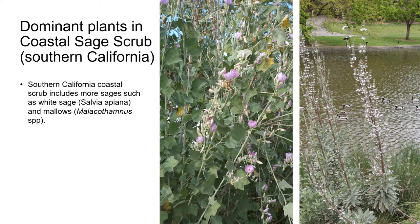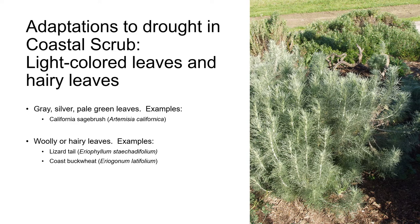Coastal Sage Scrub in Southern California includes more sages such as Salvia apiana, White Sage, which you can see on the far right and which is also found in Chaparral in Southern California. California Sagebrush, Artemisia californica, is also a common shrub, and there are several species of mallow too, such as the pink-flowering Chaparral Bush Mallow, Malacothamnus fasciculatus, pictured on the right.